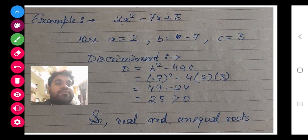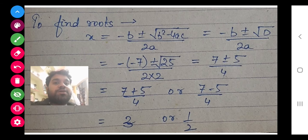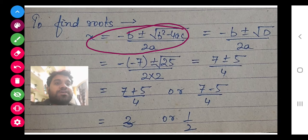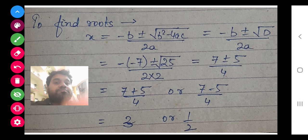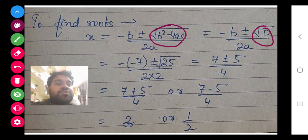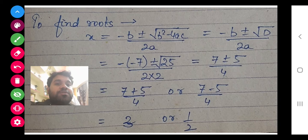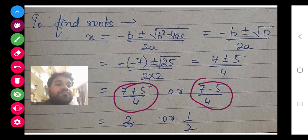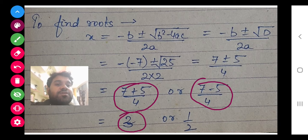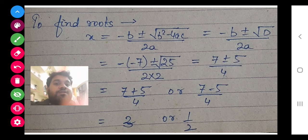Now, if it is a real root, then we can determine the roots also. You know this formula — the Dharacharya formula, that is the quadratic formula. In place of b² - 4ac we can write D. The value of D in our question was 25, so the square root of 25 is 5. Taking plus and then minus, as we do in the quadratic formula, the answer is: (7+5)/4 = 3, and (7-5)/4 = 1/2.